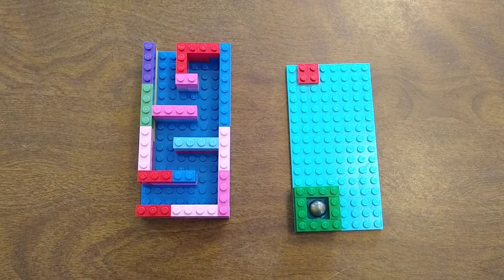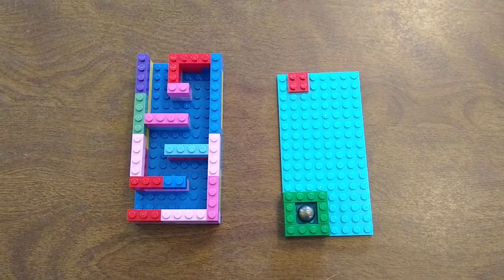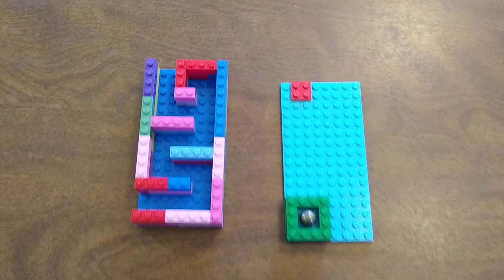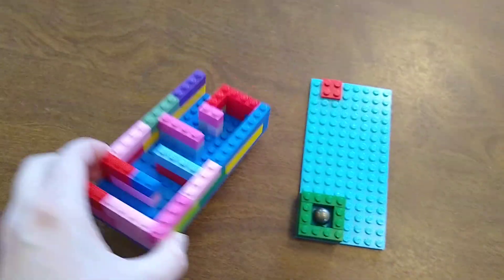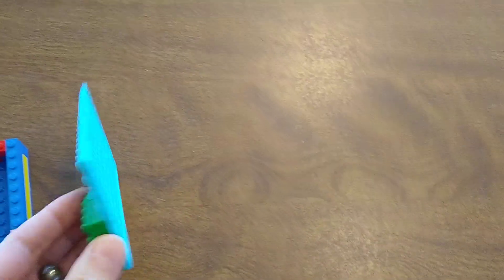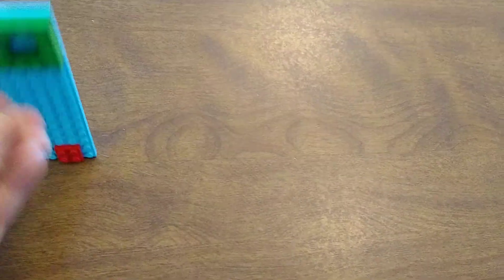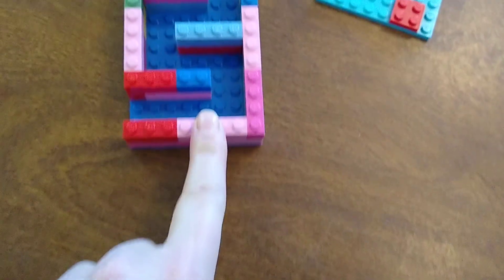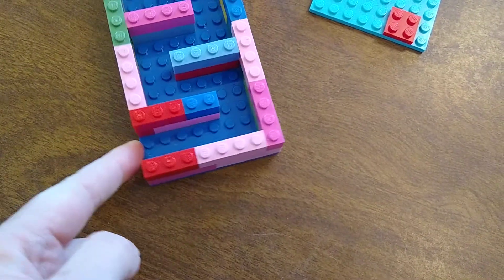We have been making labyrinths or marble mazes with our Lego. Basically what you need is a flat Lego panel at the bottom. If you've got a small enough marble, like the little bitty ones, they have to be pretty small. You can make your path only two pegs wide and two bricks high.